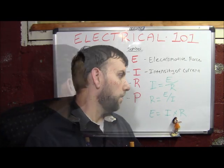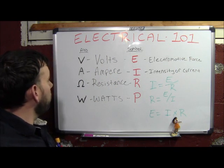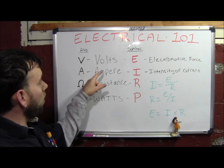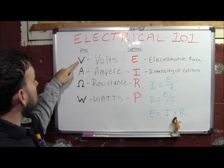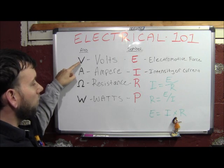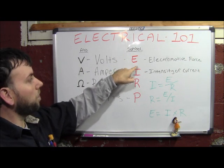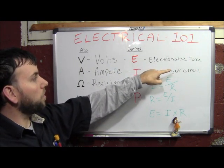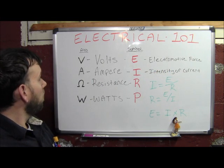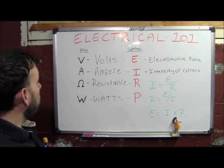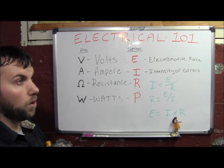We're going to start from the top — Electrical 101. Volts, or voltage, is abbreviated with a V (for Victor) and the electrical symbol is E (for Edward). Voltage is your electromotive force, also known as potential difference. Here in the US, the standard voltage is 120 volts at 60 Hertz.